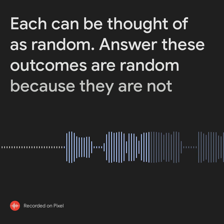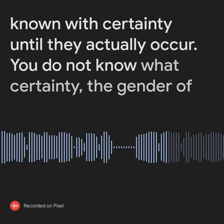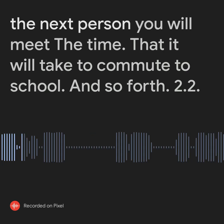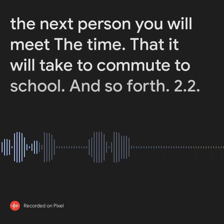Answer: These outcomes are random because they are not known with certainty until they actually occur. You do not know with certainty the gender of the next person you will meet, the time that it will take to commute to school, and so forth.